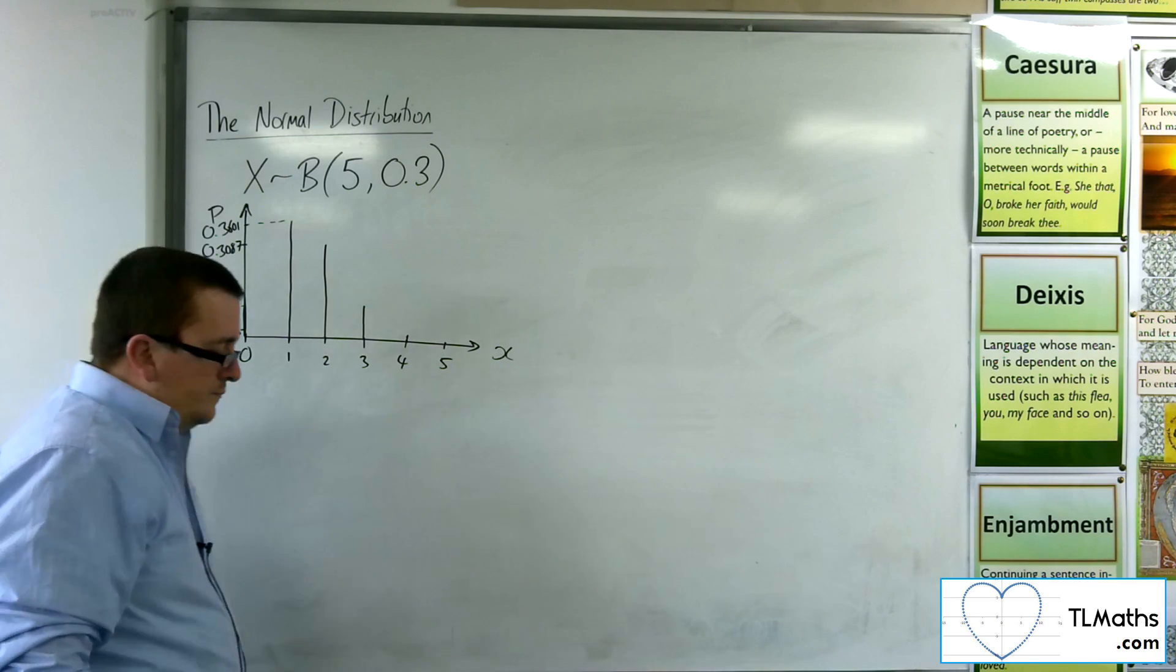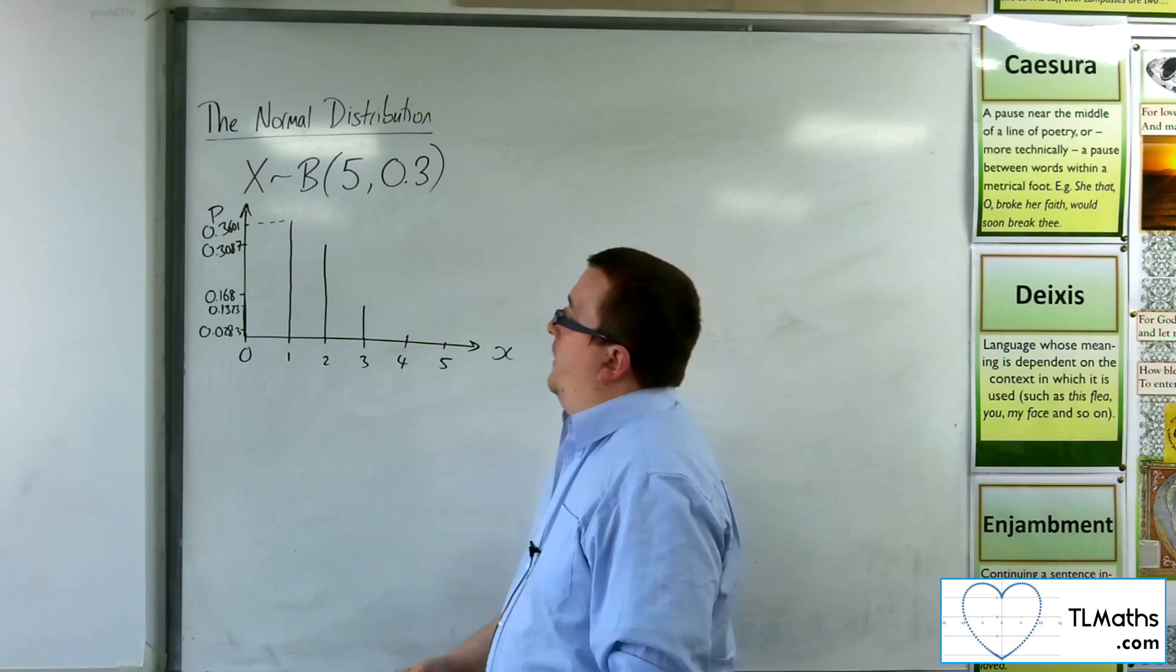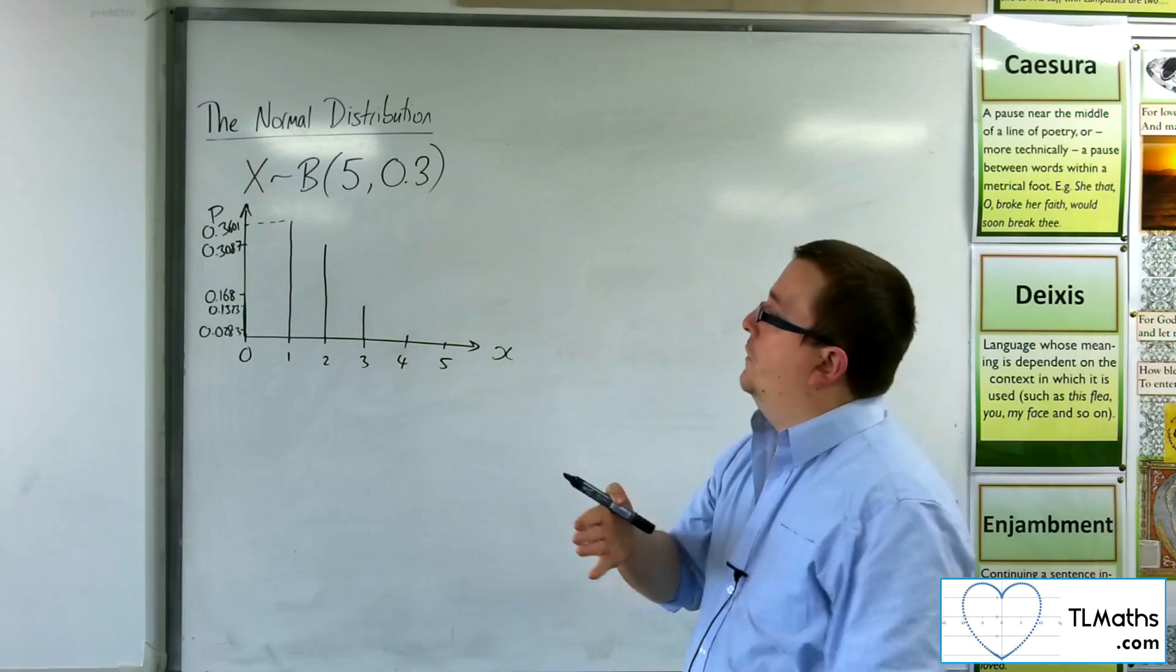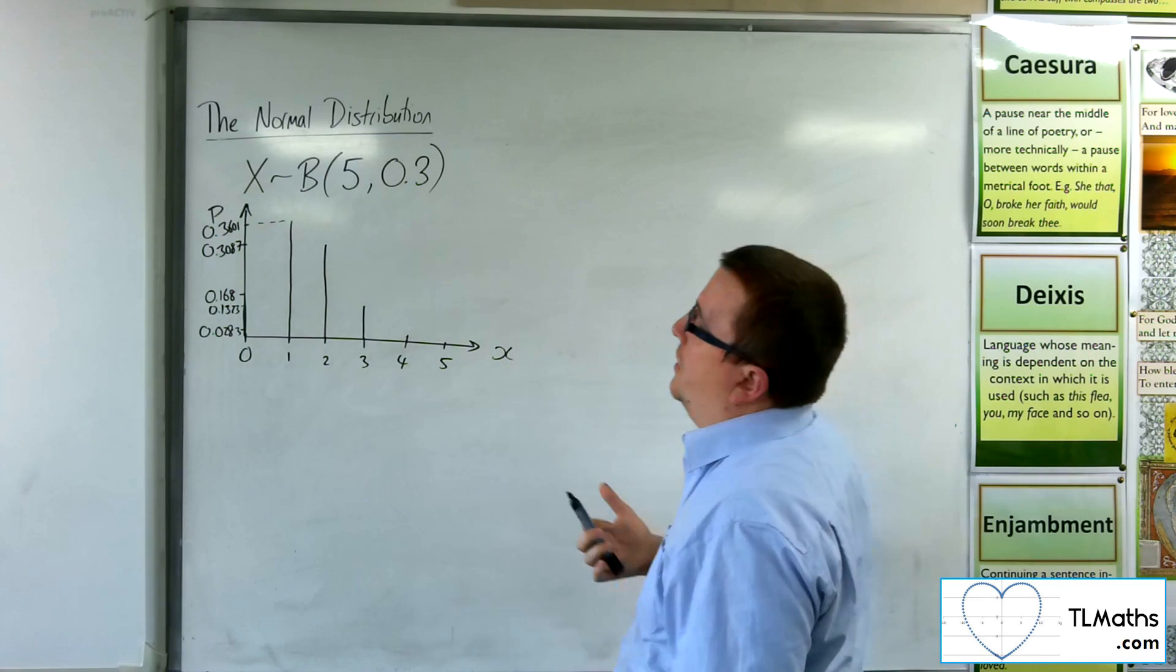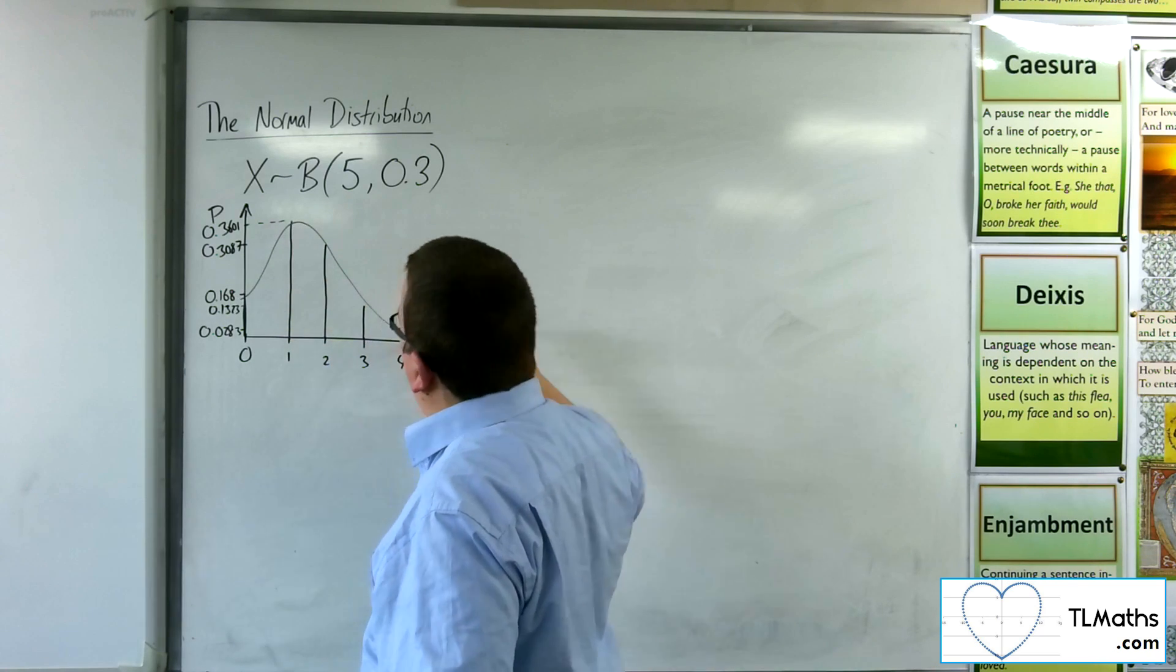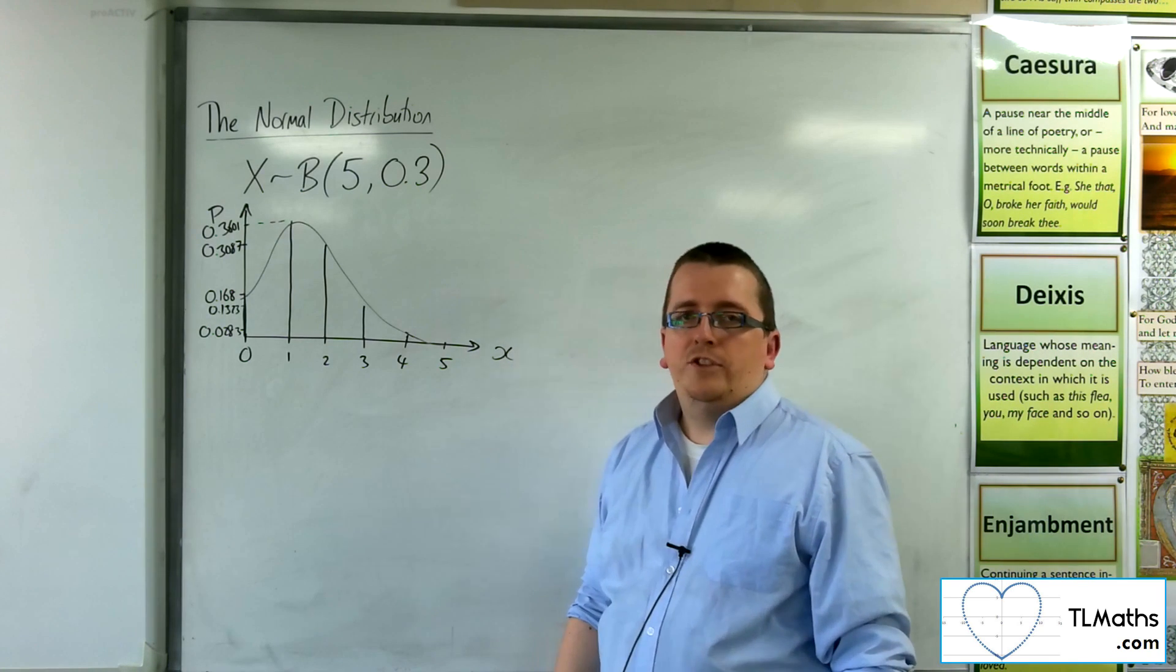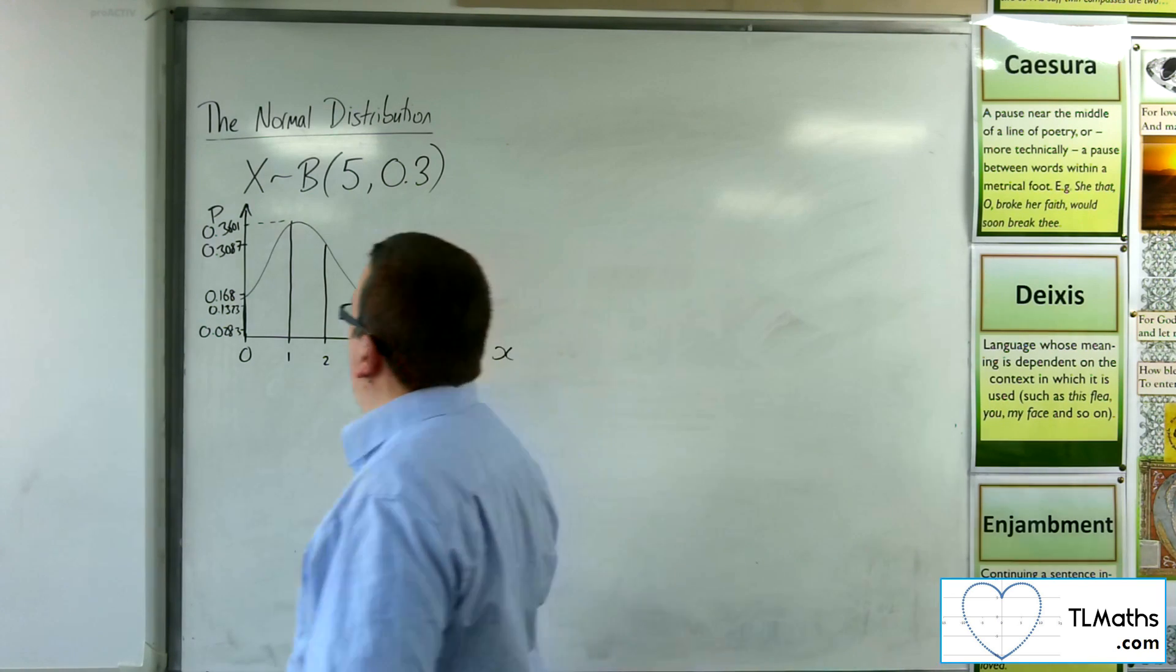Now, what we've got here is a discrete distribution, because the binomial distribution has specific values of x. However, you might start to kind of think about, well, this kind of looks like maybe something could come from this. But then you might think, well, how am I going to convert a discrete distribution into a continuous one?